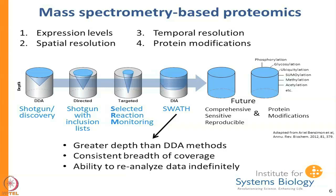The advantages of SWATH are that you get greater depth than DDA methods, you get more consistent breadth across all proteins at a given level, and you are able to reanalyze the data pretty much forever. Because you are essentially fragmenting everything, you have information about everything. With DDA or SRM you have selected an ion and fragmented it, so you only have partial information — with SWATH you have complete information that you can reanalyze indefinitely.